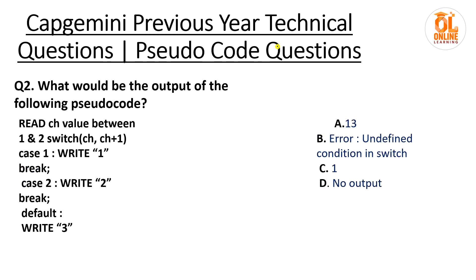Coming to the next question: what will be the output of the following pseudocode? Read ch between 1 and 2. Switch ch: ch plus 1 and 2 means it can be between 1 and 2, so basically 1 to 1.9 something. Even 1 will be included, so case 1 will definitely be satisfied. The moment case 1 satisfies, it will write 1 — that is print 1 — and it will break the switch. So only 1 will be the output, that is option C.